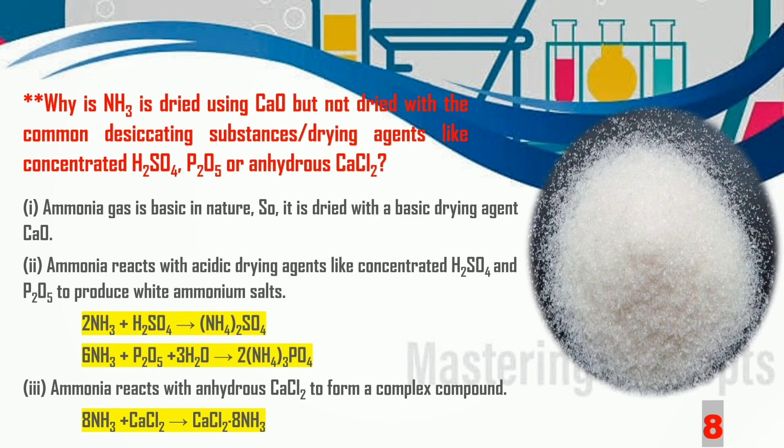However, ammonia reacts with acidic drying agents like concentrated H2SO4 or P2O5 to produce white ammonium salts like ammonium sulphate and ammonium phosphate. Ammonia gas also reacts with anhydrous calcium chloride to form the complex compound CaCl2·8NH3. Since these chemicals react with ammonia, they cannot be used for drying ammonia gas.